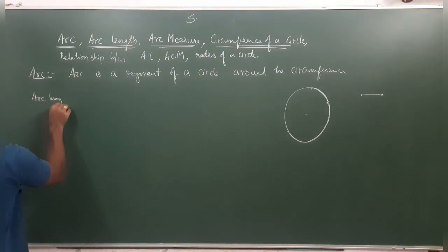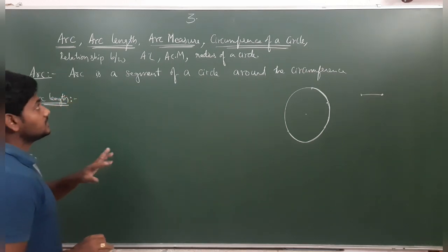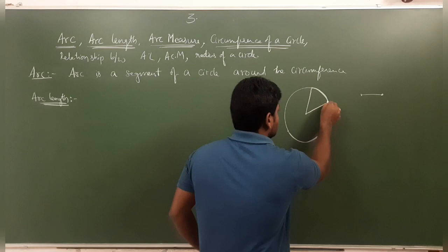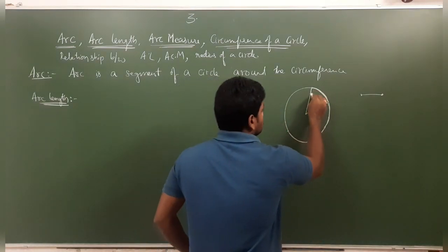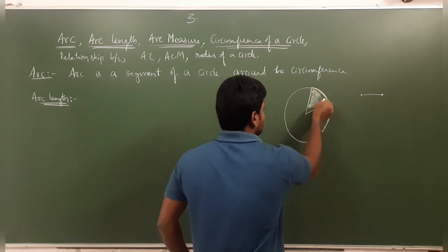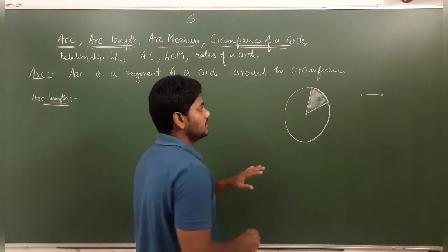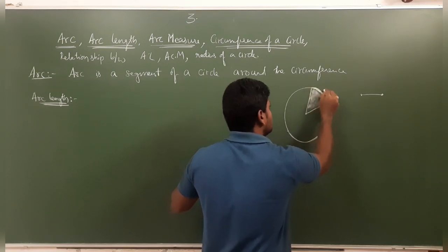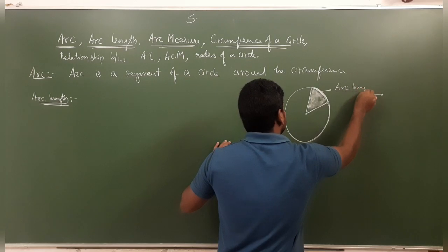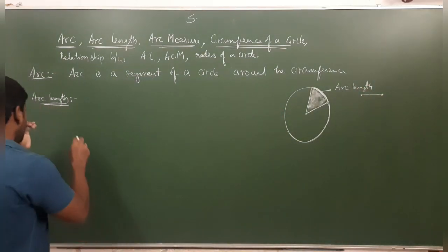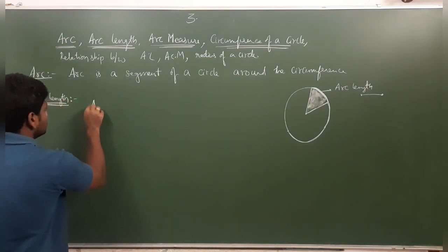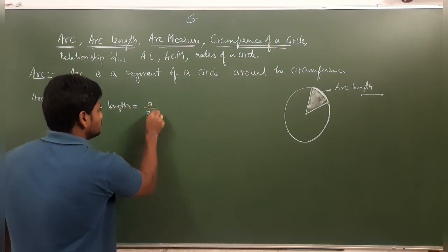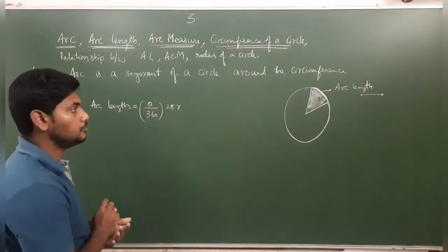Arc length is the actual length of that arc — the distance along the curved portion. There is a difference between arc length and arc measure. For a sector, the curved boundary is the arc, and its length is the arc length. The formula for arc length is: L = θ/360 × 2πr.